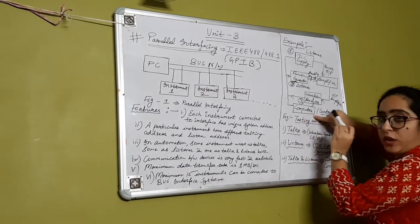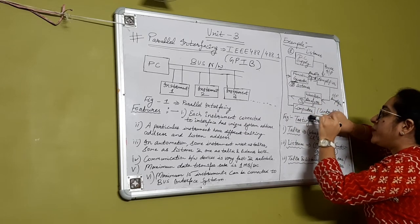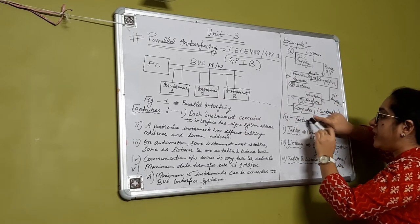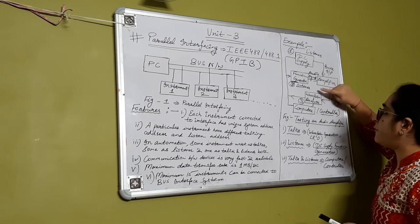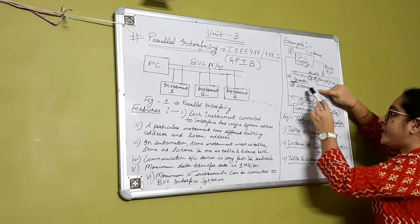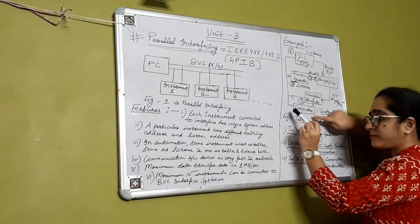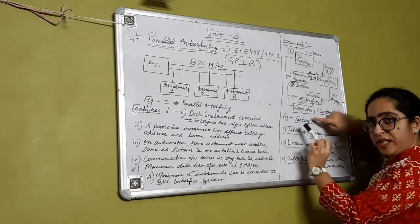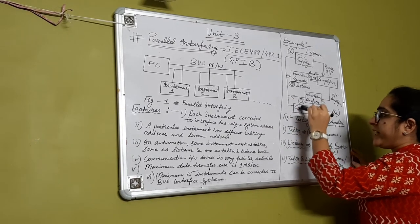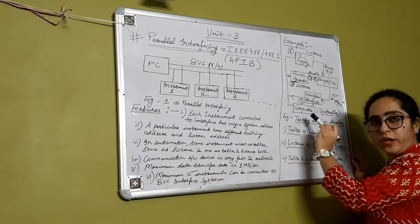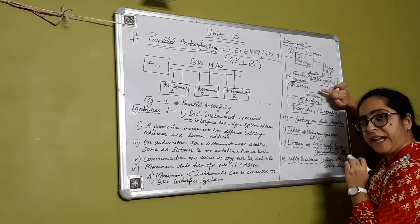The computer, which was earlier the talker talking to the function generator, DC supply, and amplifier, now deactivates its talking address and becomes the listener. The talking command is sent to the waveform analyzer. The waveform analyzer activates its talking address and communicates to the computer that the data is ready and asks whether to send the data. In that case, the computer acts as the listener and the waveform analyzer acts as the talker.